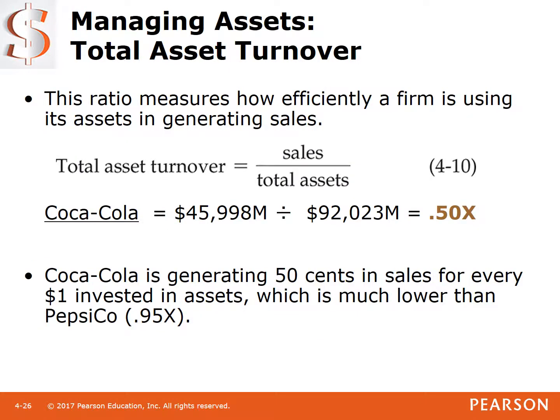Total asset turnover measures how much in sales we generate from our total assets. Taking total sales divided by total assets, Coca-Cola generates 50 cents in sales for every dollar of assets. Pepsi generates 95 cents. So it looks like Pepsi is more efficient at using their assets to generate sales, and Coca-Cola should be generating more in sales because their competition is.